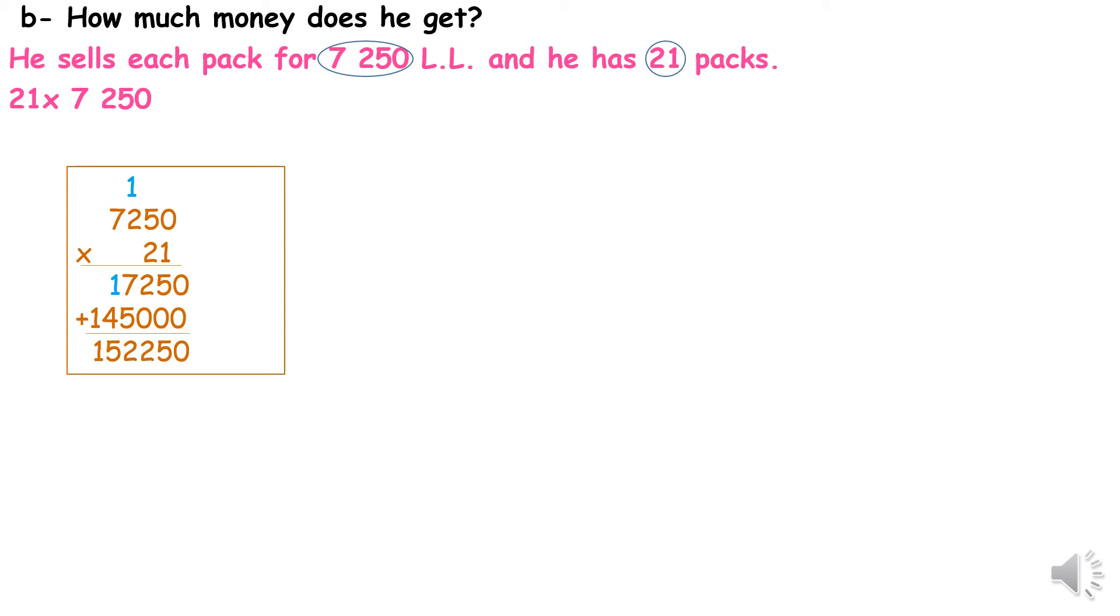2 times 0 is 0. 2 times 5 is 10: 0 carry 1. 2 times 2 is 4, plus 1 is 5. And 2 times 7 is 14. Now we add.